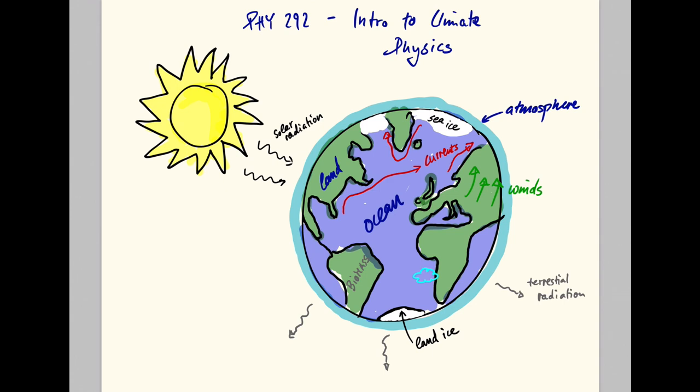There are many more components to the climate system that we may or may not touch on. For example, clouds or the role of biomass. And hopefully, by the end of this class, you will have an understanding of how all of these components work together to determine what we call climate. How scientists study it, how it has been changing and will change in the future and the challenges and opportunities that such change will bring for us.